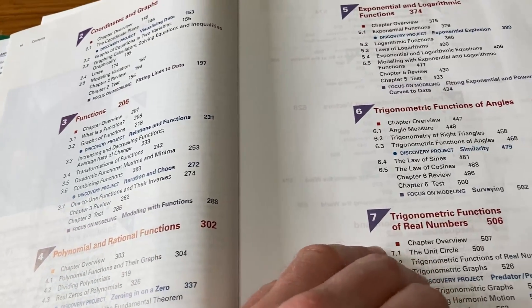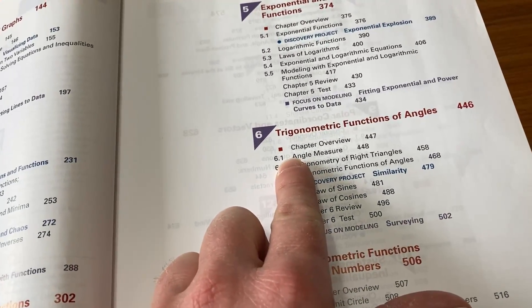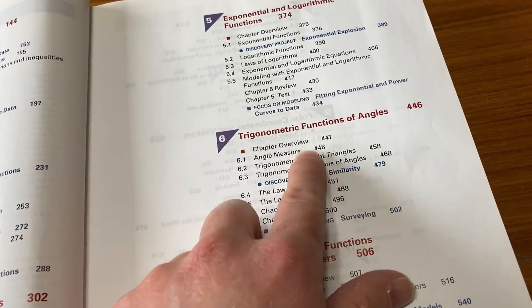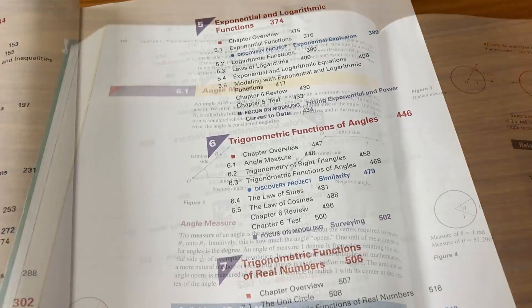The way to get started is to first pick a section. I'm going to pick 6.1, angle measure, because this is typically the first section that's taught in a trig course. So it's page 448. Let's go there right now.